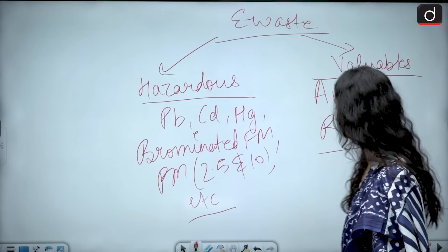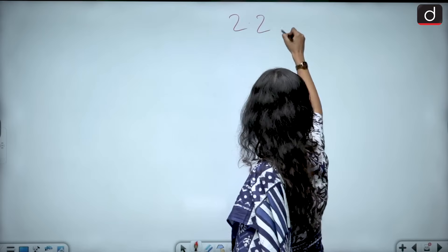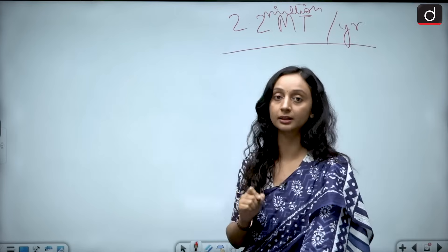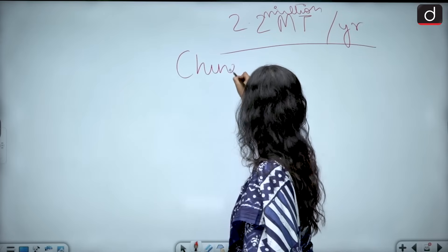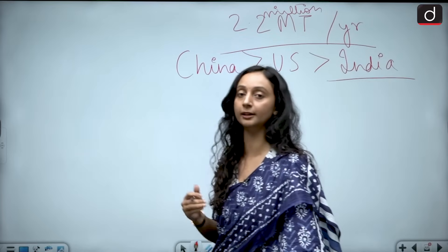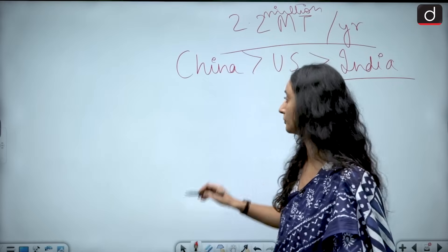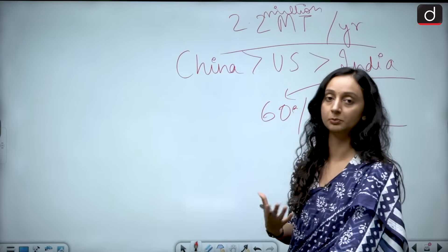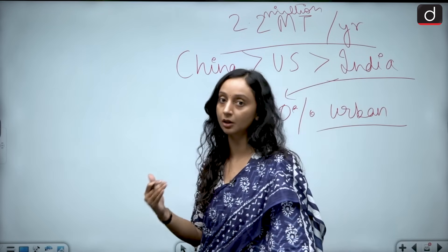What is the situation of e-waste generation in India? The situation is very alarming. India generates 2.2 million metric tons of e-waste annually, making us the third largest producer of e-waste in the world after China and the US. Out of this 2.2 million metric tons, majority is coming from urban areas — 60% from urban areas and the remaining 40% from rural areas — because most electrical appliances are being used in urban areas.